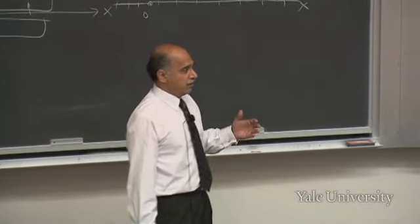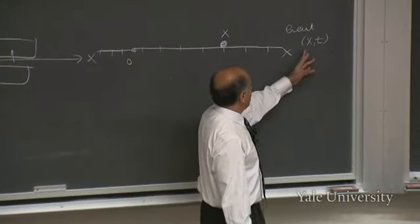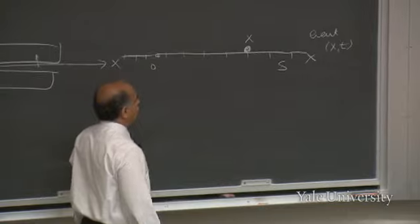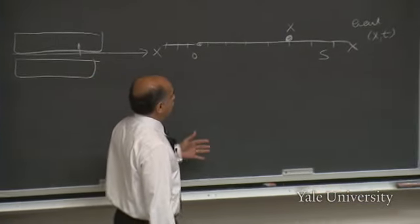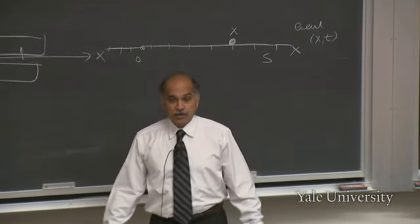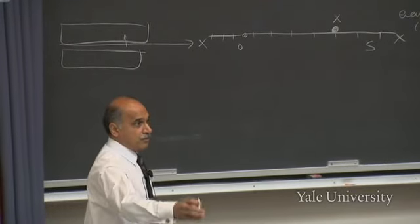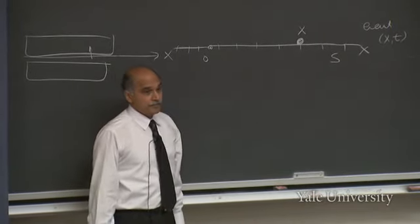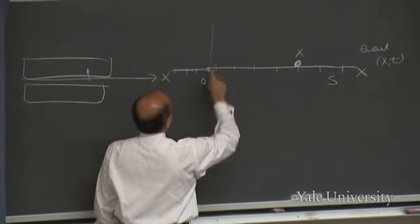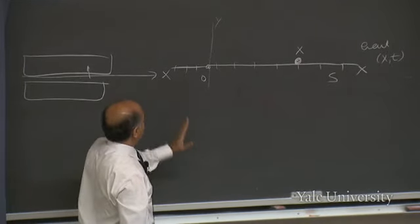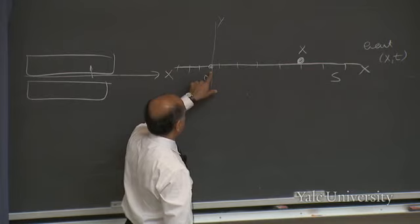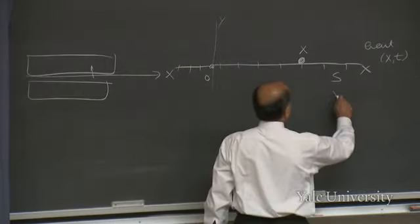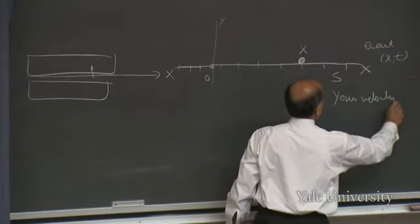An event is something that happens, and to say exactly where and when it happened, in one dimension we give it an x and a t. That's me, and my frame of reference is called S. The other observer is called S-prime — that's you. Your frame of reference is sliding relative to mine. This is my y-axis, my x-axis, my origin. You are sliding to the right, and your velocity is always denoted by u.